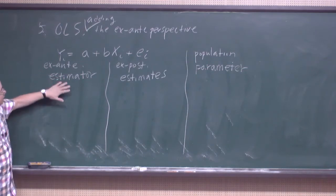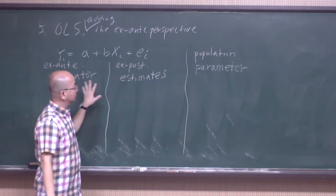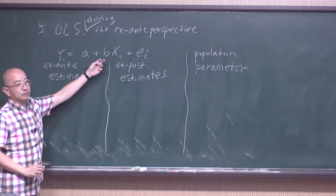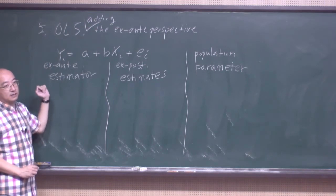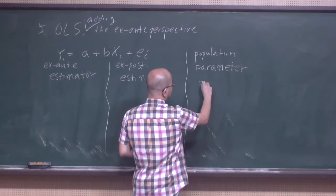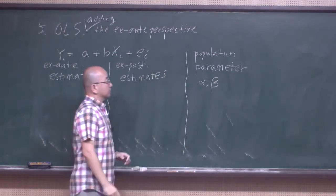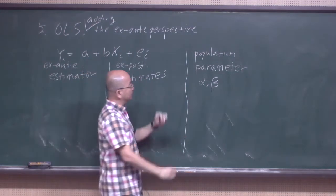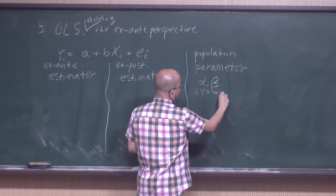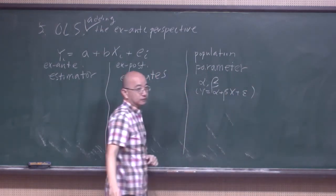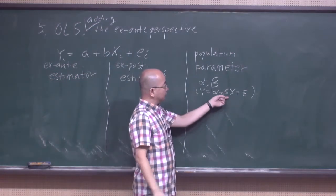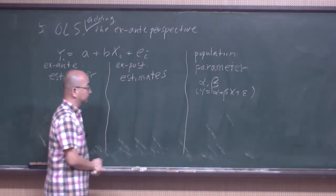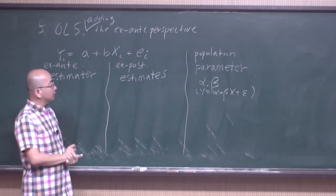Now let's relate A, B, and E to this distinction. First, we can think about the population parameters that correspond to A and B — those that show the true relationship between x and y. Let's call them alpha and beta. These are population parameters that we are really interested in. If we believe that y is truly alpha plus beta times x plus some epsilon, then beta shows the true relationship between, say, the individual's height and the mother's height. But that's a population parameter and we don't observe it.